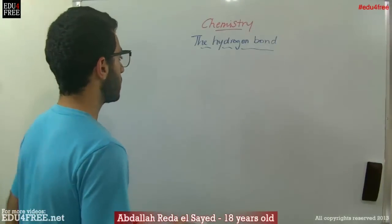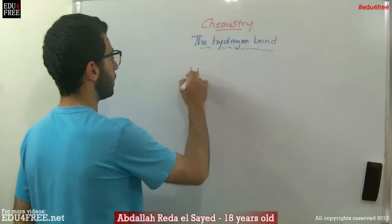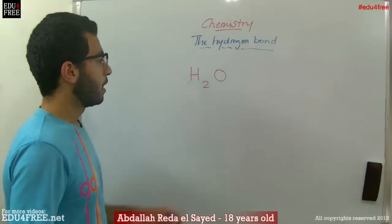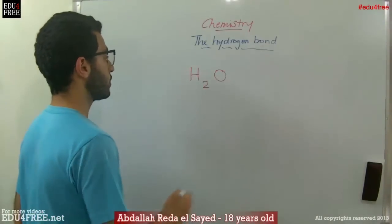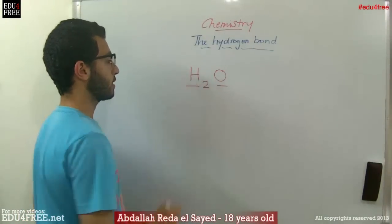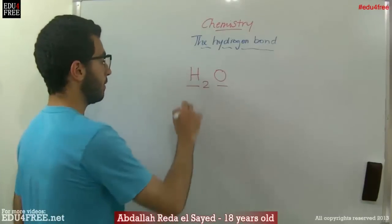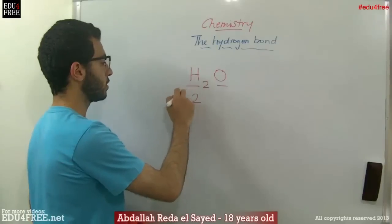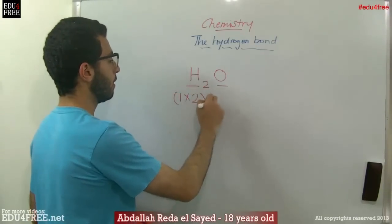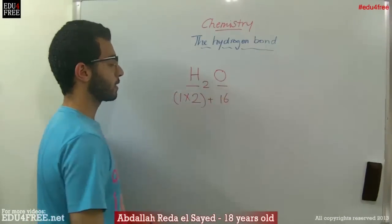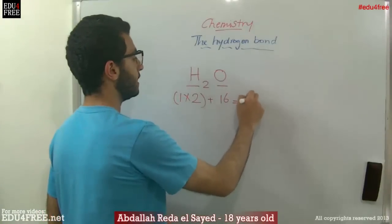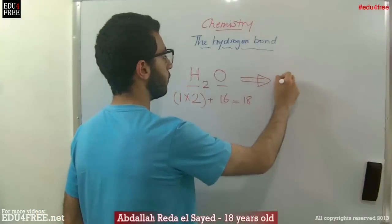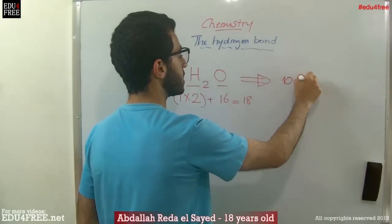First of all, let's take the water molecule as an example. Water consists of two atoms of hydrogen and one atom of oxygen. This gives us a molecular mass of 1 times 2 for hydrogen plus 16 for oxygen, which gives us 18 grams per mole. And the boiling point of water is 100 degrees Celsius.